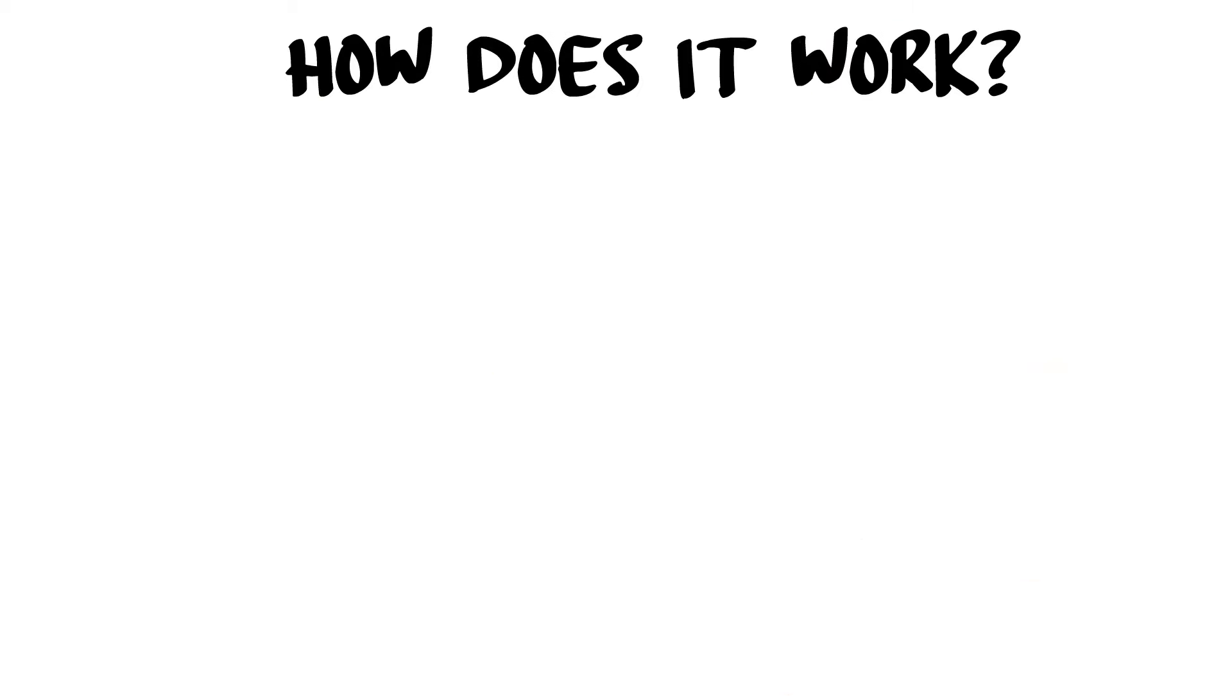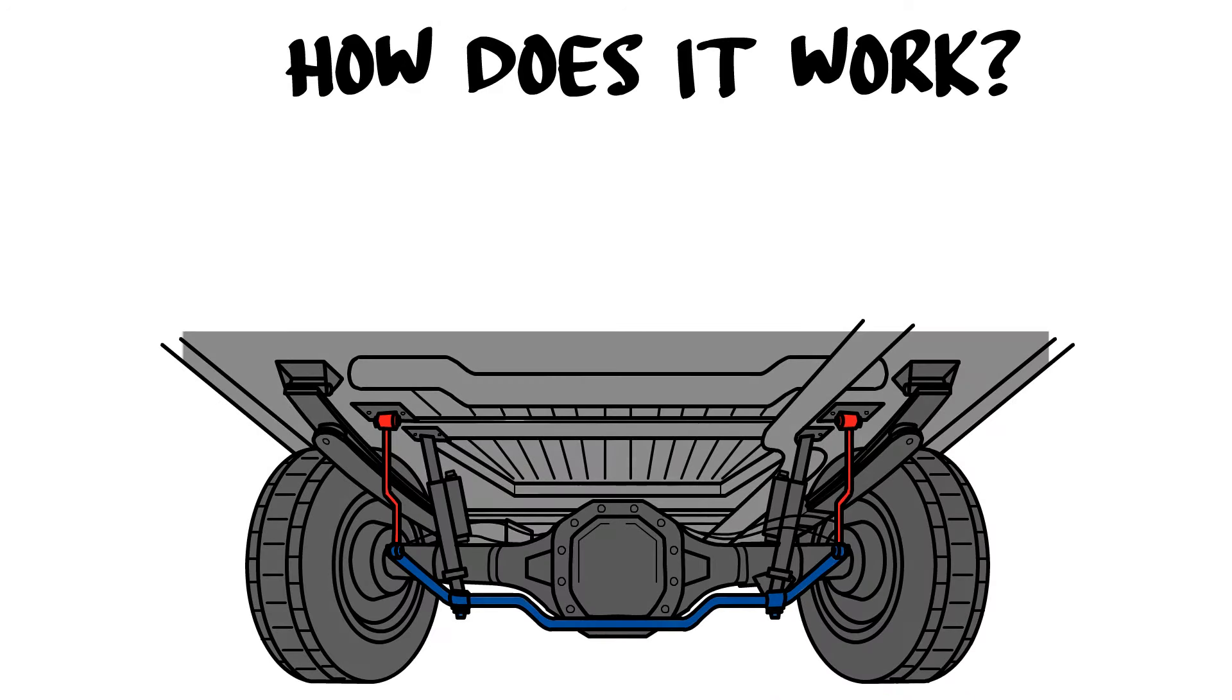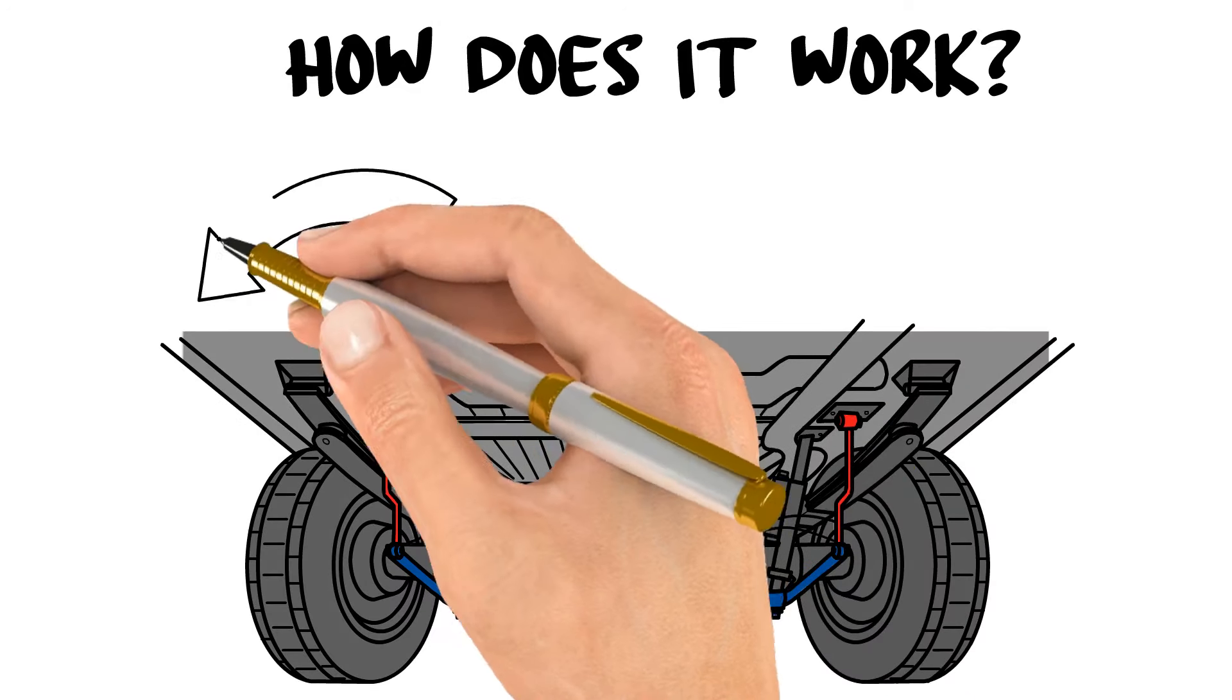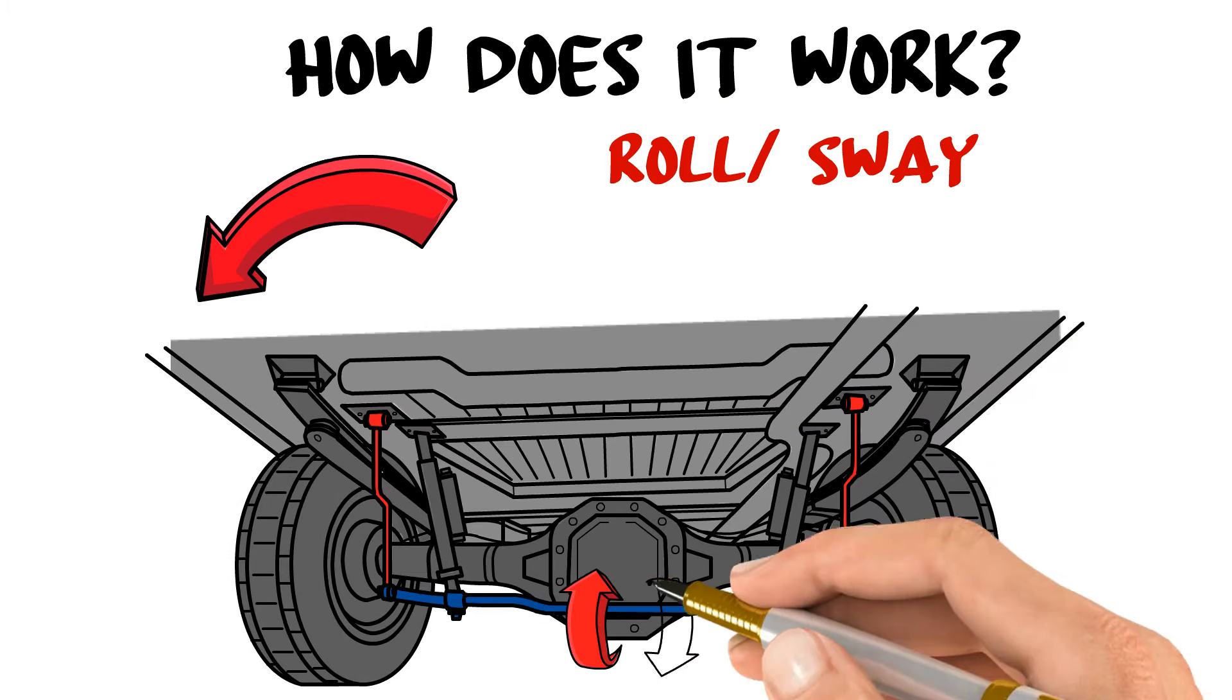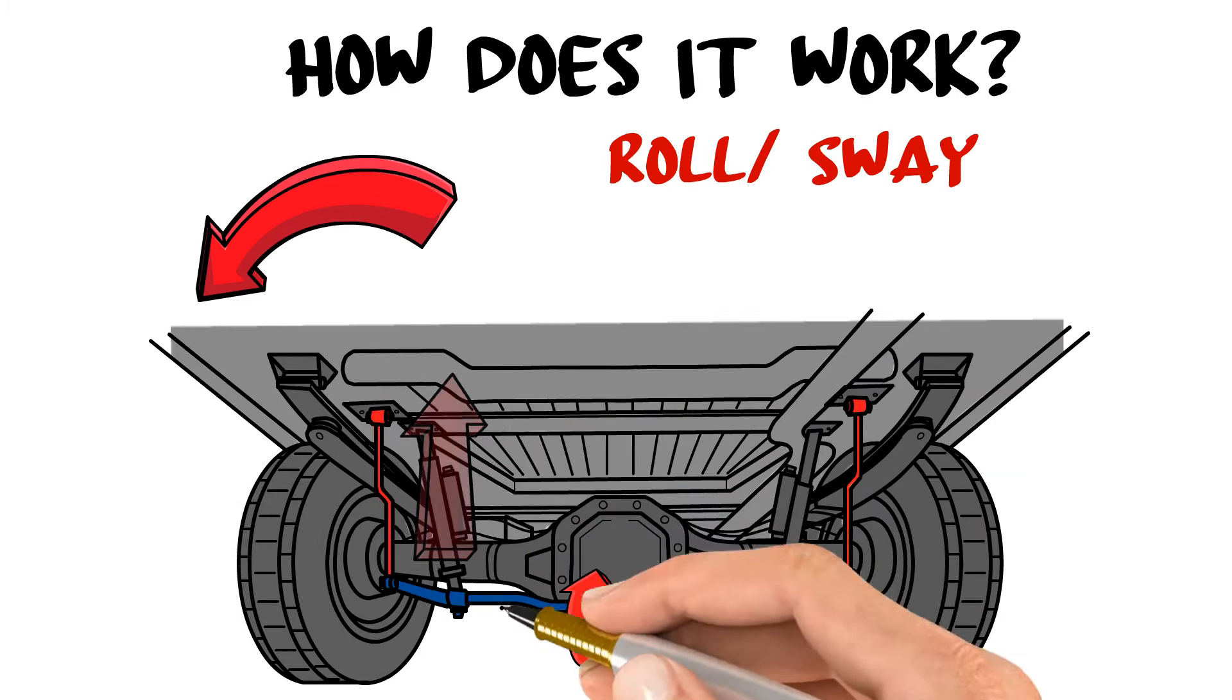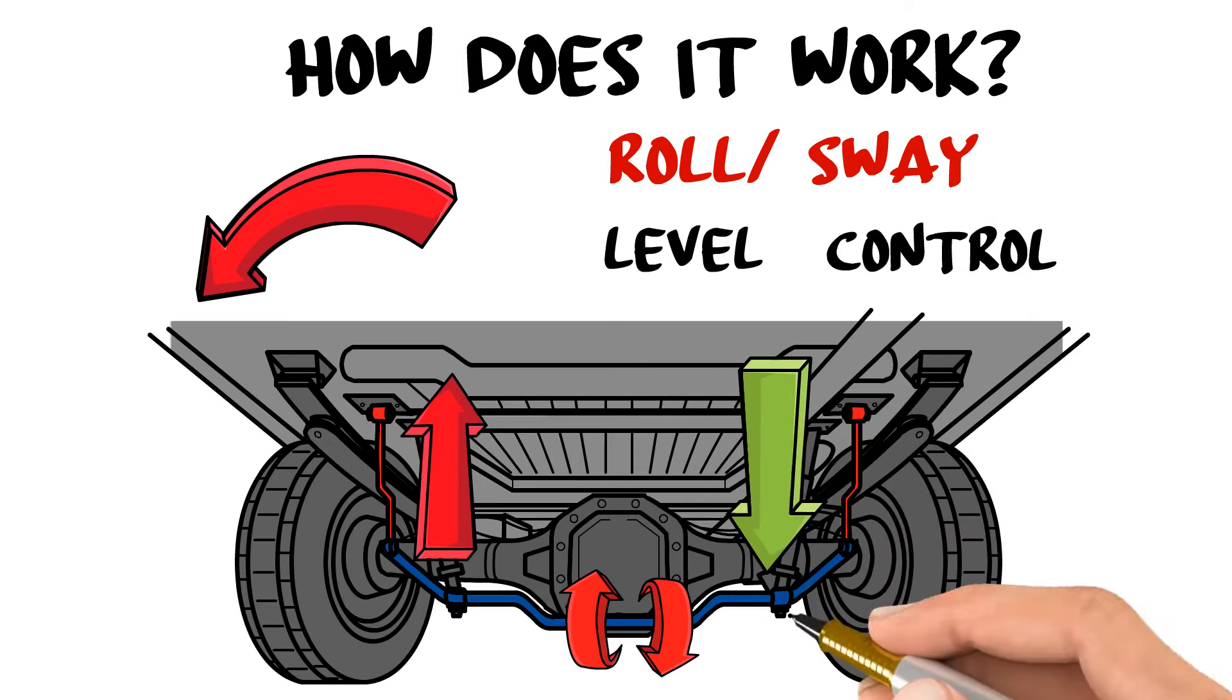How does it work? When mounted, the sway bar is fastened to arms that connect to your vehicle's body or frame. So, whenever the body starts to roll or sway one direction, the sway bar twists and pulls the lifting side back down, improving stability and handling by keeping the vehicle flatter to the road surface.